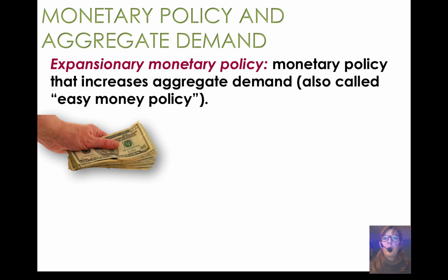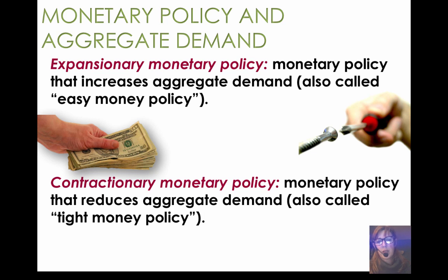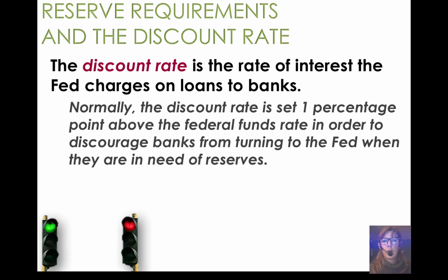Expansionary monetary policy means increasing the money supply to increase spending, because increasing the money supply decreases the interest rate. And decreasing the money supply increases the interest rate. Contractionary monetary policy — also called tight money policy — tries to contract spending by increasing interest rates. The discount rate is the rate the Fed charges banks; if banks are short on their reserves, they can either borrow from each other or borrow from the Fed, and the Fed can encourage or discourage that borrowing.